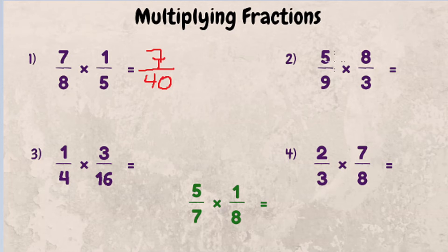Example number 2. What is 5 ninths times 8 thirds? You might get thrown off because this is an improper fraction, meaning the numerator is higher than the denominator. But it doesn't matter. The same principle applies. Let's multiply 5 times 8, which is 40. 9 times 3 gives us 27.